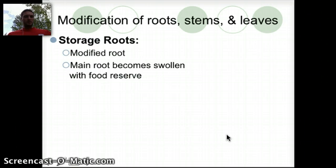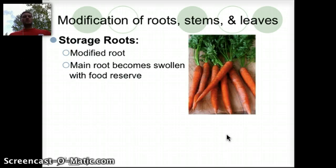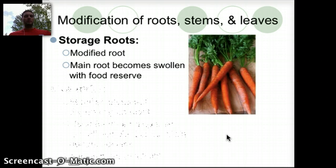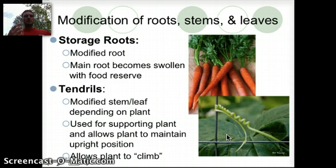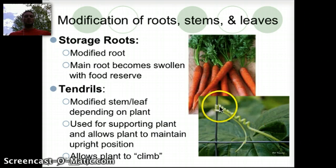Another example would be storage roots — this is a modified root where the main root becomes swollen with a food reserve. A great example is carrots. The tendrils modification involves the stem or the leaf, depending on the plant. Basically it's a way for the plant to climb up and spread itself out. We sometimes see this in pea plants. Support systems are often put up for these plants so the modified stems and leaves can attach and be held up.